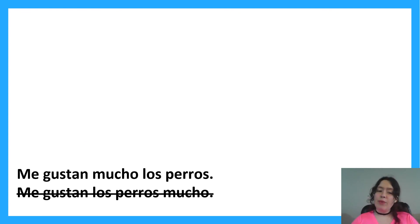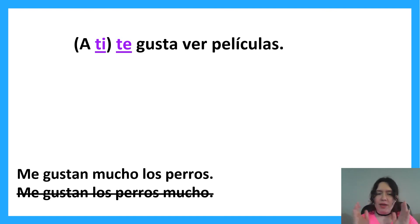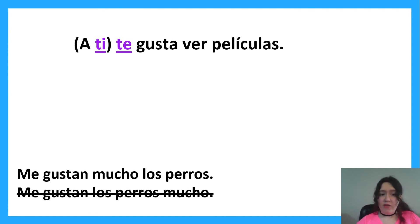I have an example with one thing crossed out — I'll get to that. First, 'a ti te gusta ver películas.' The 'a ti' is in parentheses because it's an optional part — we only use it when we really want to make emphasis or specify. If you want to say 'ti,' you have to include the 'a.'